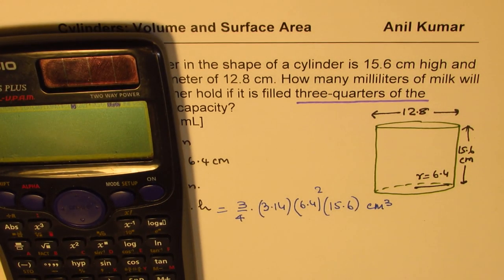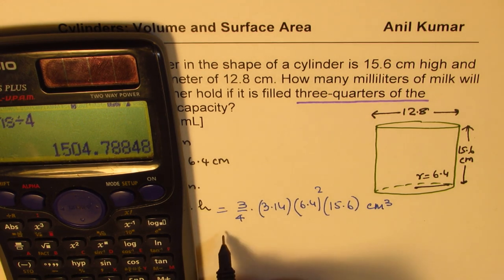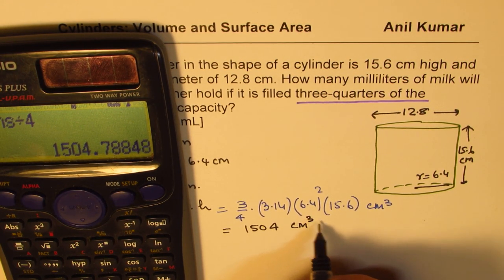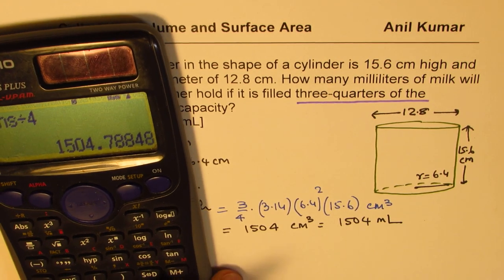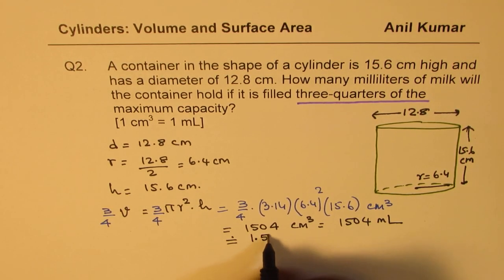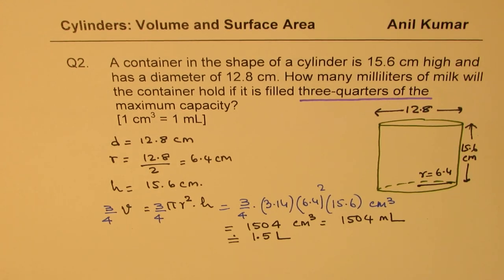So let's multiply the things first: 3 times 3.14 times 6.4 squared times 15.6, and then we'll divide this by 4 to get three quarters of the volume. So that gives us 1504 centimeter cube, which is the same as 1504 milliliters, or you can say approximately 1.5 liters. So that is how you could find three fourths of its volume.